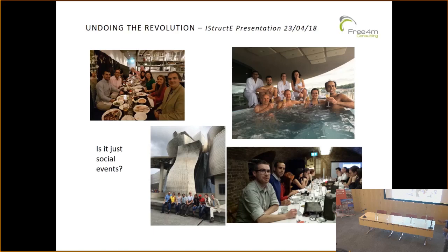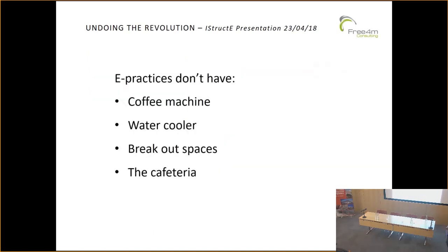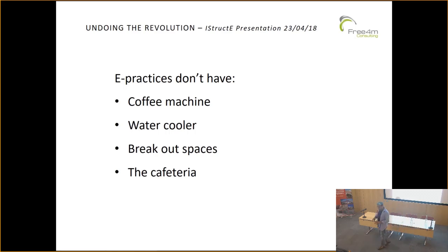Then we try to do social events — the beer night, beer Friday, pizza Friday, whatever. We try to copy what Google's doing. Put a pool table in there, everybody's on roller skates. But e-practices don't have any of this. We don't have a coffee machine, we don't have a water cooler — that place where people gather in the kitchen for a quick chat. We don't have breakout spaces or a cafe. So we don't have the infrastructure where a lot of conversations take place.